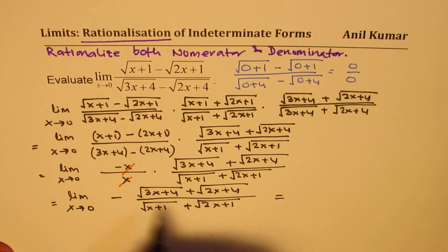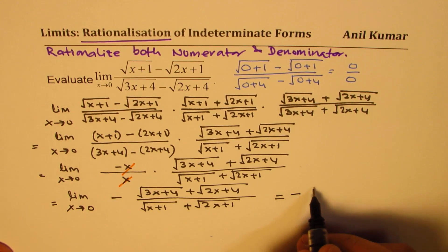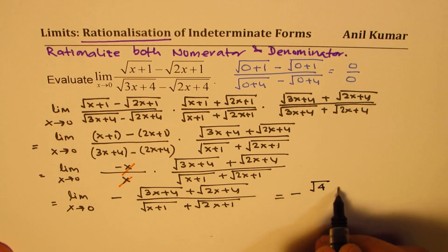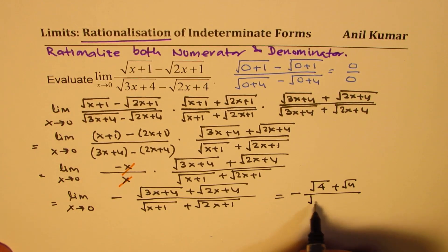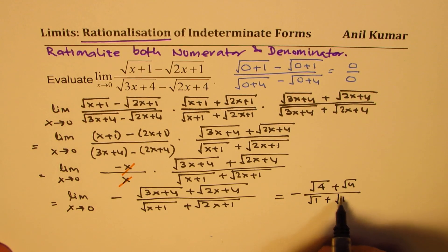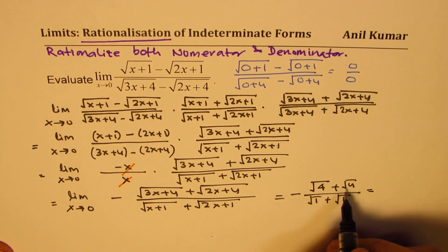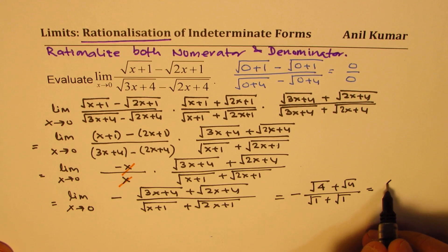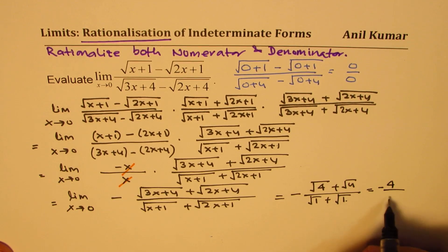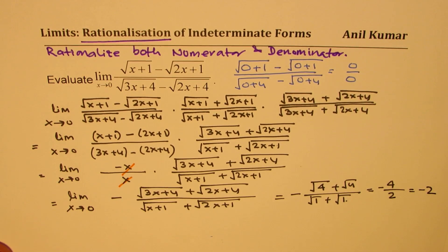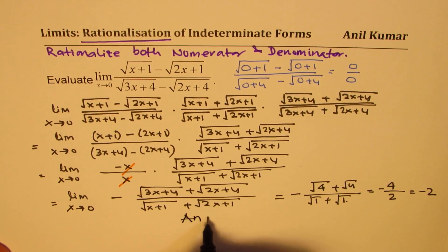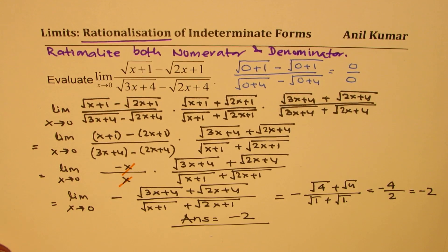Once you substitute 0, we get negative 1 times square root of 4 plus square root of 4, over square root of 1 plus square root of 1. That is 2 plus 2 over 1 plus 1, which is 4 over 2. So we get negative 2 as our answer. The limit of this particular function is minus 2.